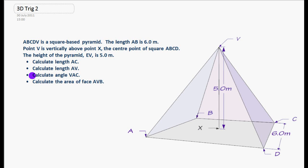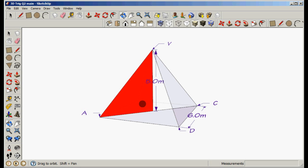In part 3 we calculated the angle VAC. Let's go back to our Google SketchUp and we're going to look at where we were previously. V to A to C is the angle we're going to look at.